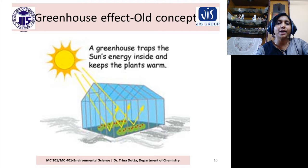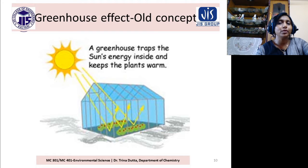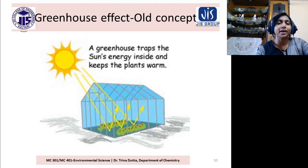Sunlight is of shorter wavelength, so it can penetrate through the glass. But the longer wavelength cannot go outside of this glass house. And as a result, inside the glass house a warm condition will be created.